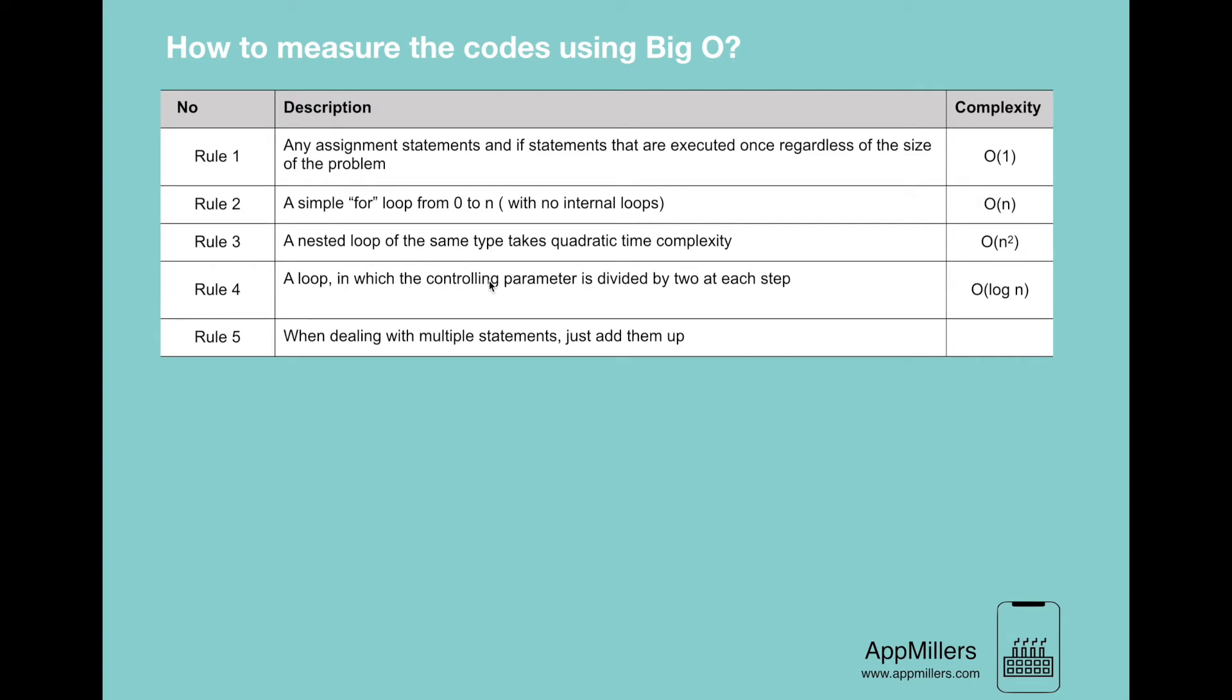We should be warned that some declarations may include initializations and some of these may be complex enough to factor in the efficiency of algorithm. So these are the most common rules that you need when you analyze any given code.